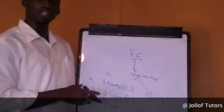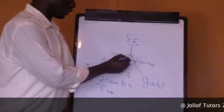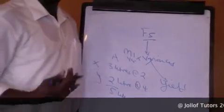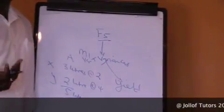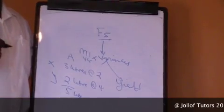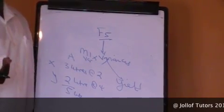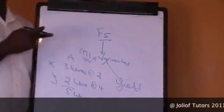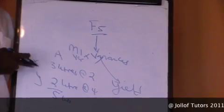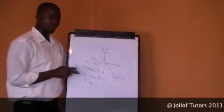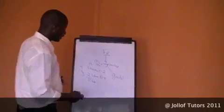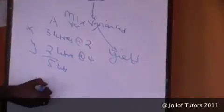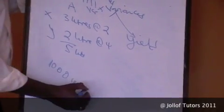We are able to calculate a mix variance when the mixture of the ingredients of a product can be changed, so that the standard mixture will be different from the actual mixture. In this case, the standard mixture is 3 to 2 for ingredient X and ingredient Y. To calculate a mix variance — for example, if we said we have produced 1,000 units of this product.